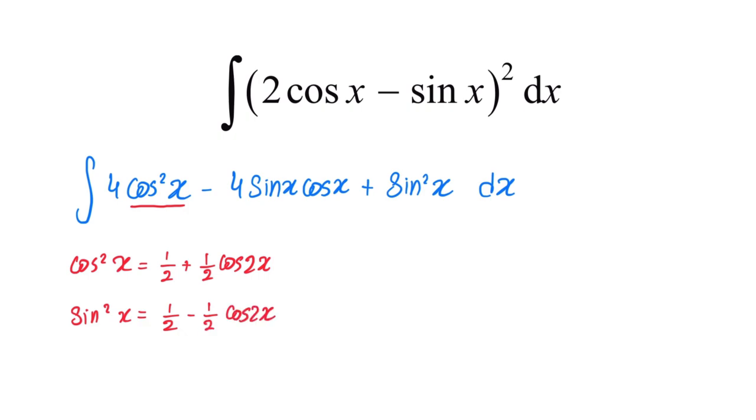So we can replace these identities into the main integral to get 4 times cosine squared, which means 4 times half plus half cosine 2x, which is 2 plus 2 cosine 2x, plus minus—